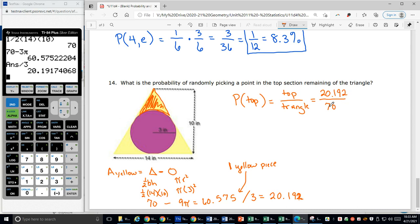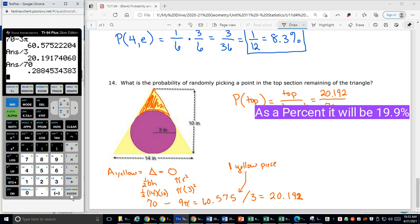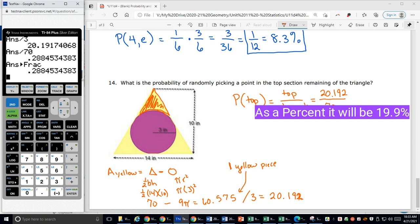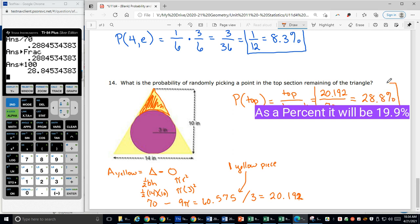So 20.192 divided by 70. I already have this in the calculator and it's not rounded. So I'm just going to say, take that answer and divide by 70. Now odds are, this is not going to make a pretty fraction. Math fraction. Nope. The calculator is like, nope, that's not going to happen. You're not going to be able to make this a fraction any better than what you've got there. So I'm going to leave it like that as my fraction. And I'm going to say as a percentage, since I have it as a decimal here, I'm going to say times 100. And as a percentage, I get 28.8 percent. 28.8 percent of the time I'm going to land in just that top yellow section if I'm randomly picking a point somewhere in this triangle.